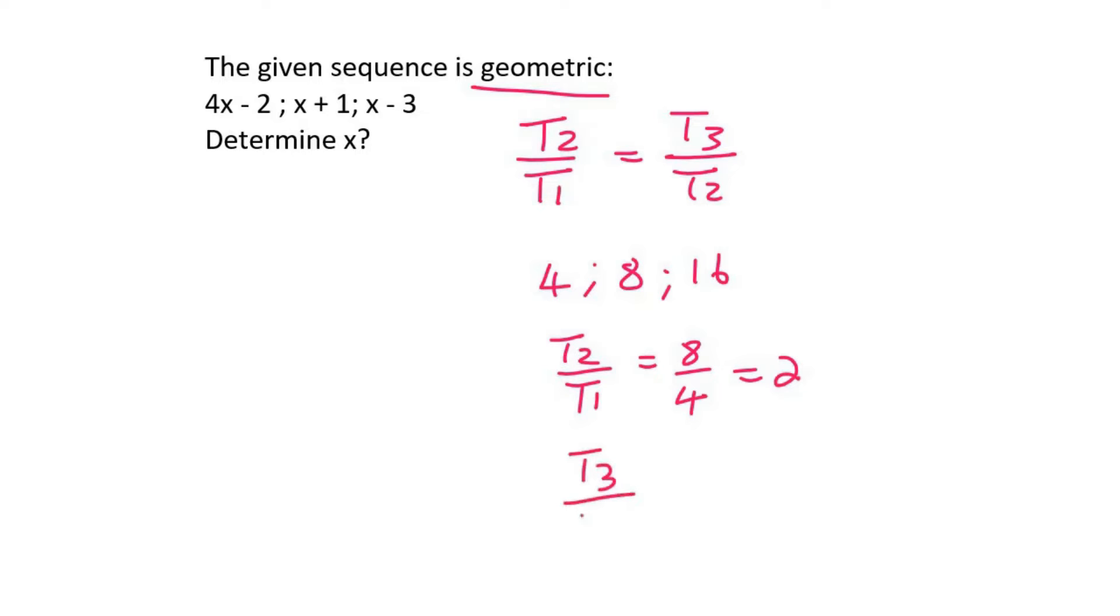If I say term 3 divided by term 2, that will be 16 divided by 8, which is 2. So the ratio remains constant.